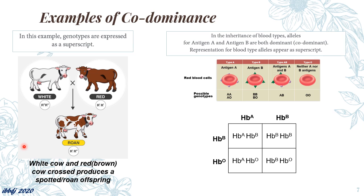Here are some examples of codominance. Crossing a white cow and a red or brown cow will produce a spotted offspring, also called roan. This inheritance is also similar in crossing chickens. Zebras, on the other hand, are a combination of white and black. Another example of codominance is the inheritance of blood type. Blood type corresponds to antigens present on a cell: antigen A for blood type A, antigen B for type B, and antigens AB for type AB. Type AB is an actual example of codominance, having A and B alleles both dominant. Type O, on the other hand, does not have any antigens, so type O is considered a recessive trait.